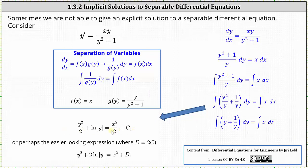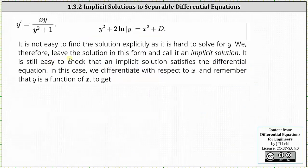It might be easier to clear the fraction from the equation by multiplying both sides by two, which gives us y squared plus two times the natural log of the absolute value of y equals x squared plus two times c. We'll let d equal two times c and just write plus d. This is the general solution. It is not easy to find the solution explicitly, as it is hard to solve for y, so we leave the solution in this form and call it an implicit solution.